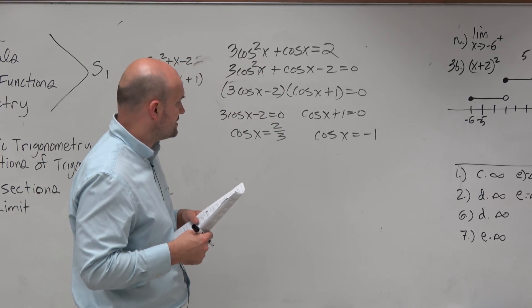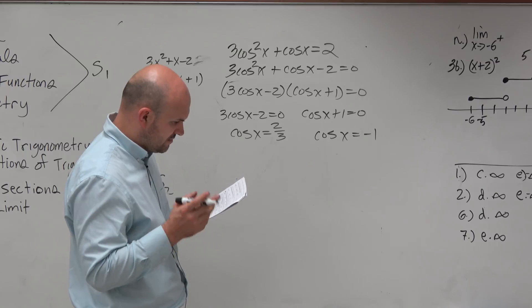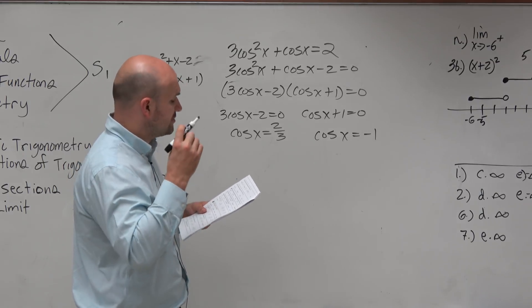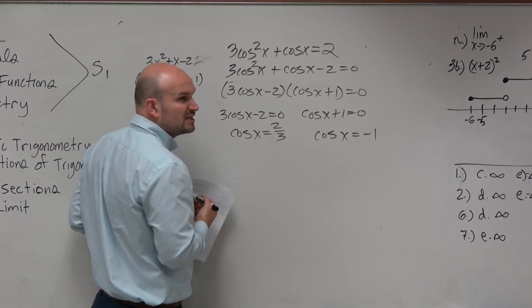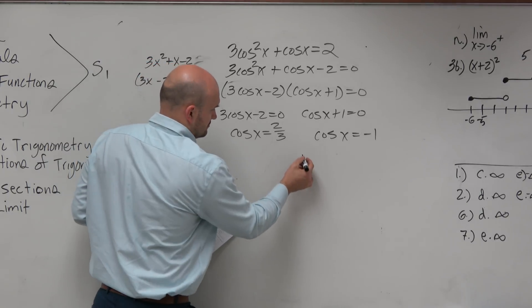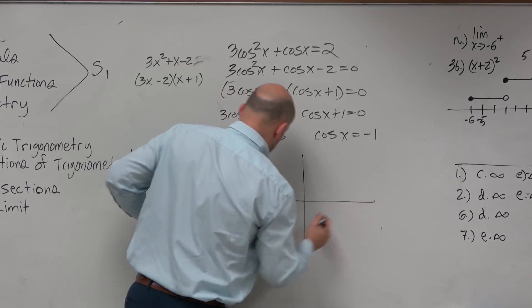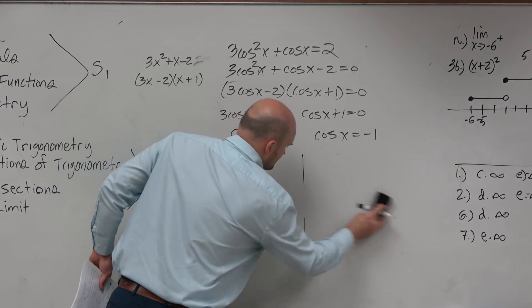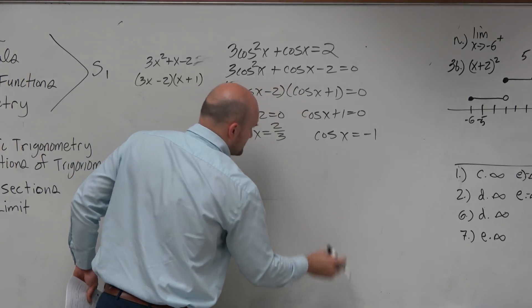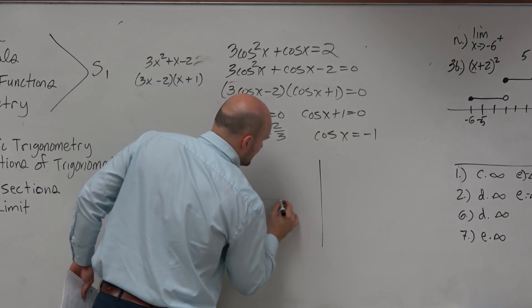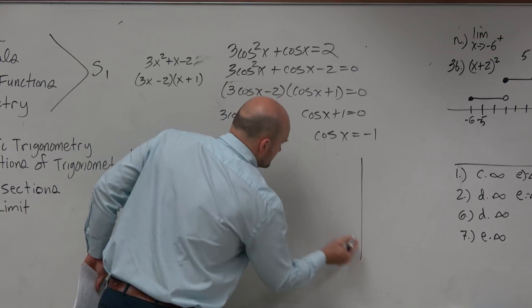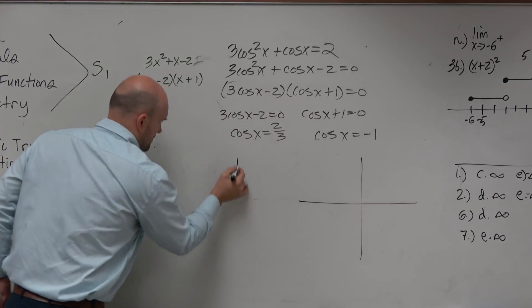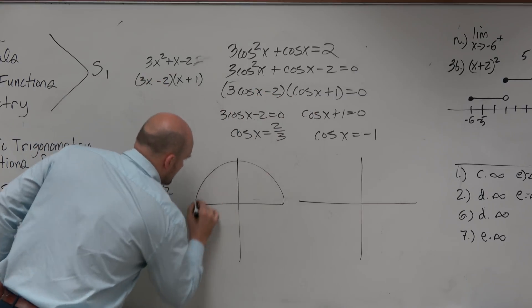And then cosine of x equals negative 1. And we're trying to find, oh wait, hold on. It has to be between 0 and 2 pi. OK. So here, what we can do, we can look at the graphical approach. Actually, let's look at the graphical as well as the unit circle approach to answer this question.